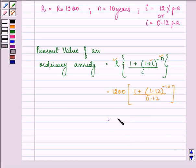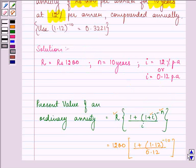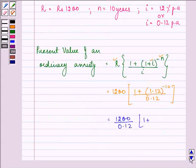This is further equal to 1200 upon 0.12 into 1 plus, now 1.12 raised to the power minus 10. The value is given to us in the question itself and we will use it here. It is given to us as 0.3221.